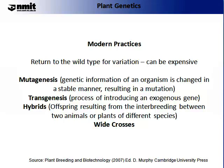So let us have a look at some of these modern practices. There isn't enough time to go into all of the areas of plant genetics in the detail that I would like; however, we will have enough time to introduce some of these concepts. One of the first trends we are seeing in recent genetics is a return to using wild type for variation. This is very time consuming and can be expensive; however, it does allow a new source of variation to enter the genetics. Mutagenesis is where the genetic information of an organism is changed in a stable manner resulting in a mutation, certainly a practice that enables new variation in the population.